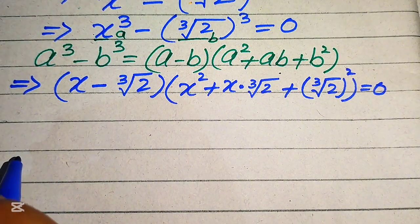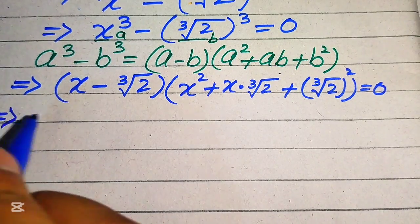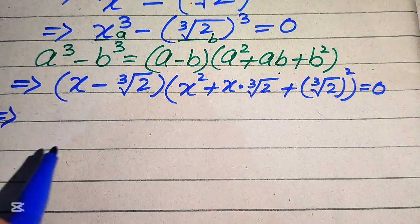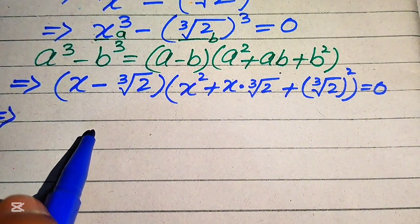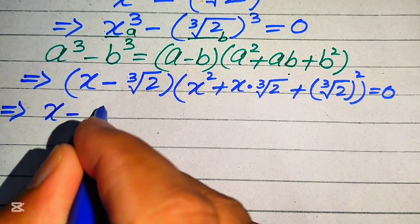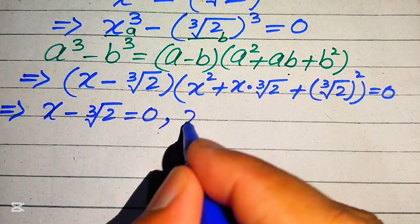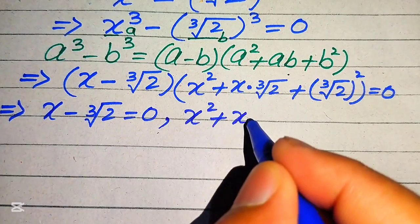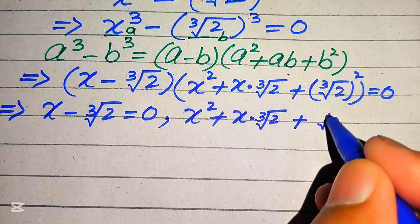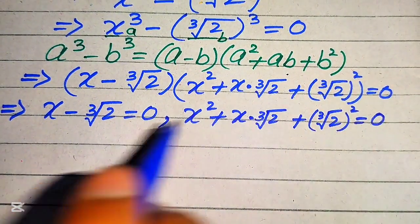Now we rearrange terms and break this equation into two cases. The first case is: x minus cube root of 2 equals zero. The second case is: x squared plus x times cube root of 2 plus cube root of 2 whole squared equals zero.